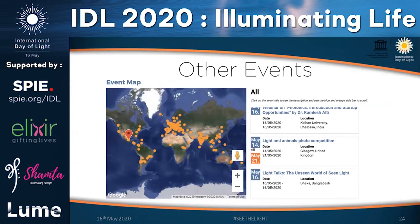Talking about other events: following 2015, independent organizations all over the world have been hosting their own IDL events. You can find the nearest one to you by going onto the SPIE website and clicking on your region. The frequency of events shows IDL is not restricted to just 16th May — you can do it around the month of May and have your own event as well.